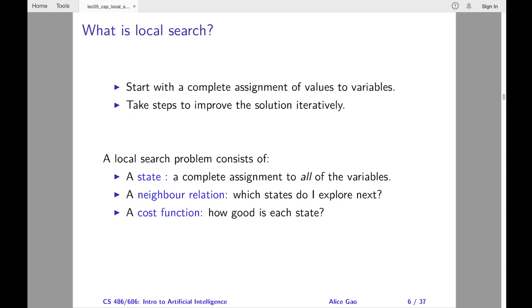For local search, we start with a complete state where all the variables have assigned values. At each step, we will modify the state based on our neighbor relation, trying to change it to a goal state. For four queens, we would start with a board with four queens on it and move one queen at a time until the four queens do not violate any constraint.